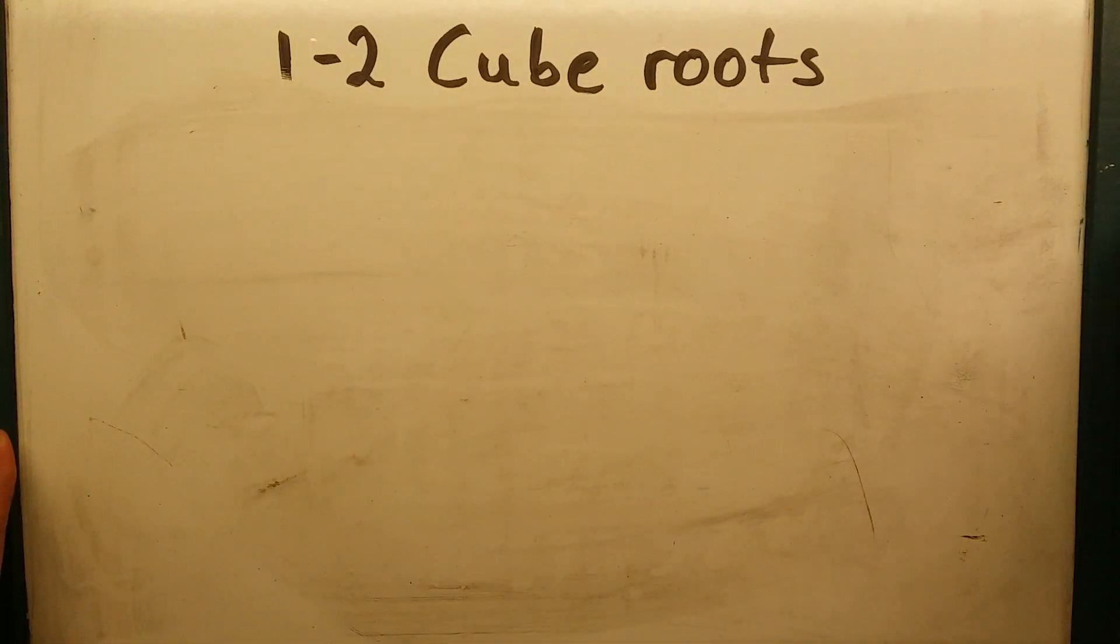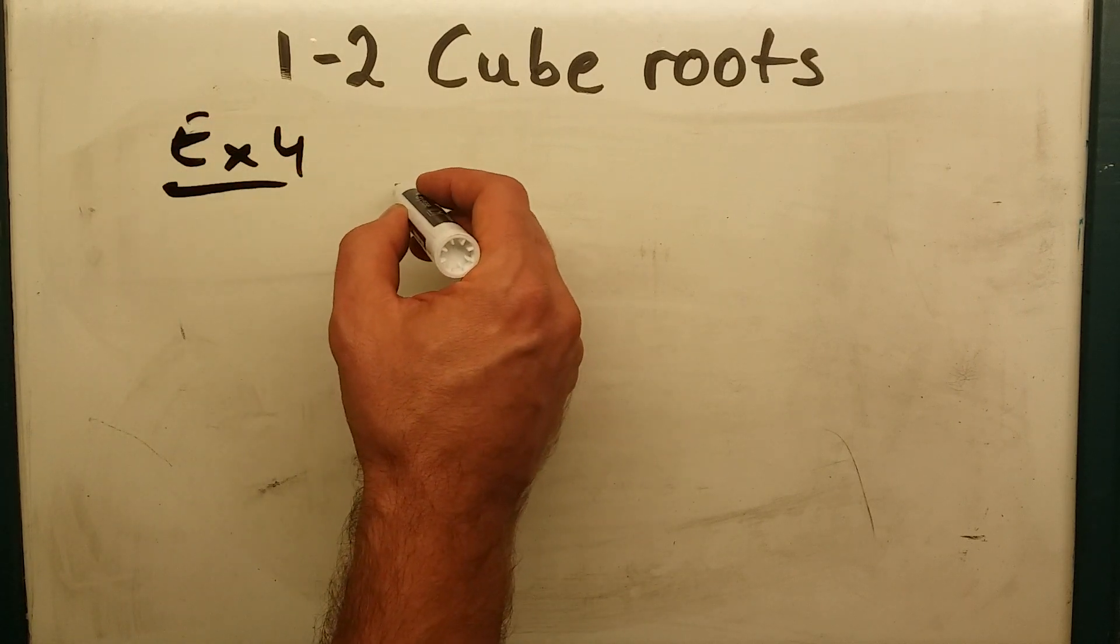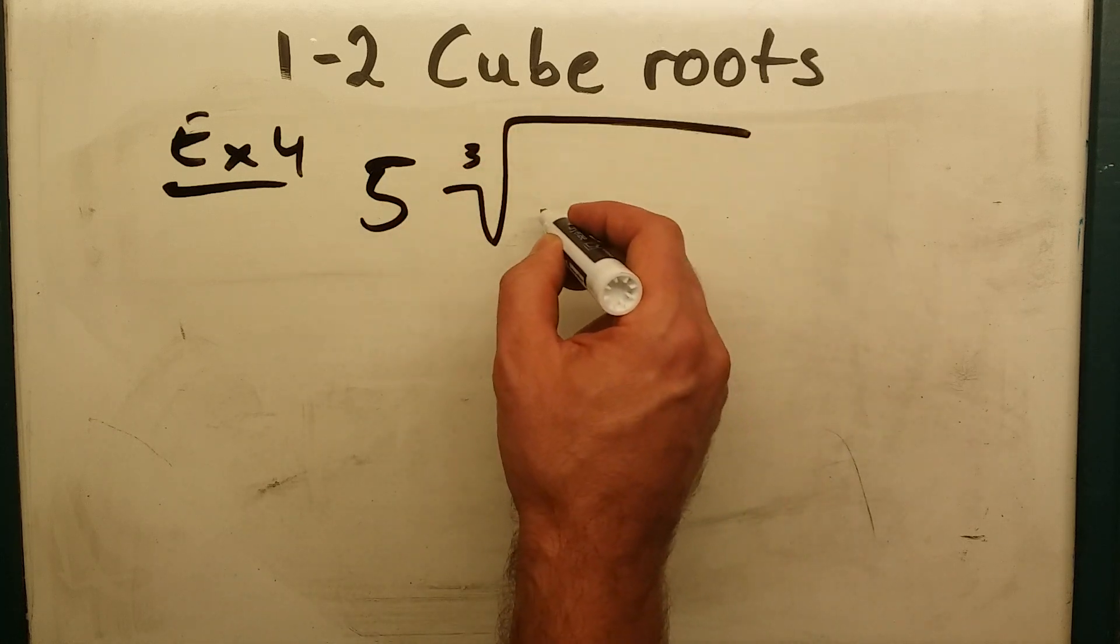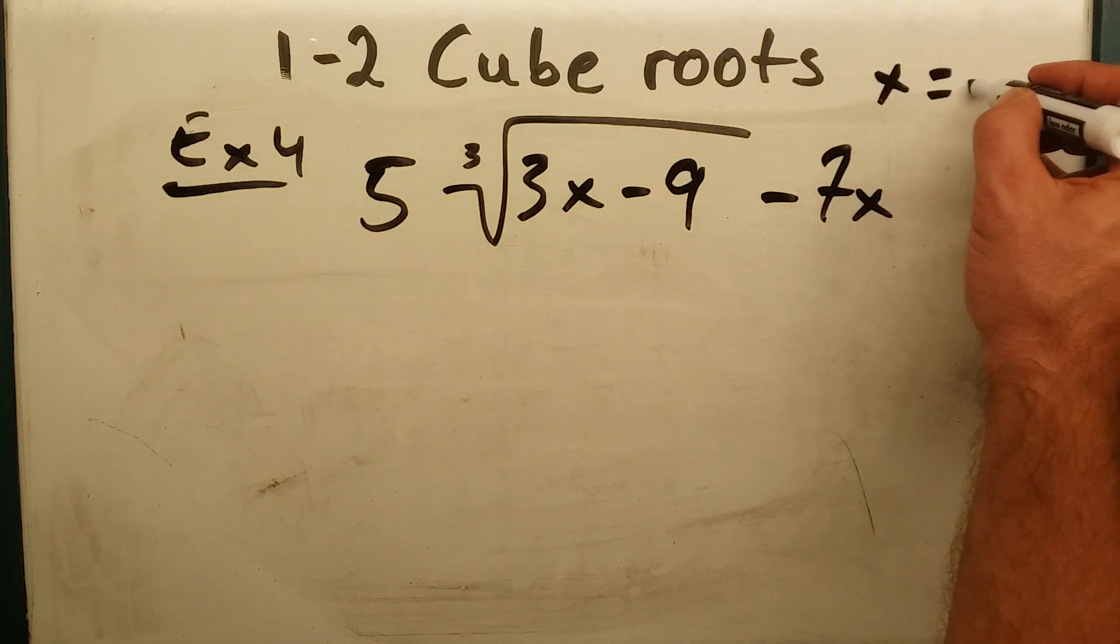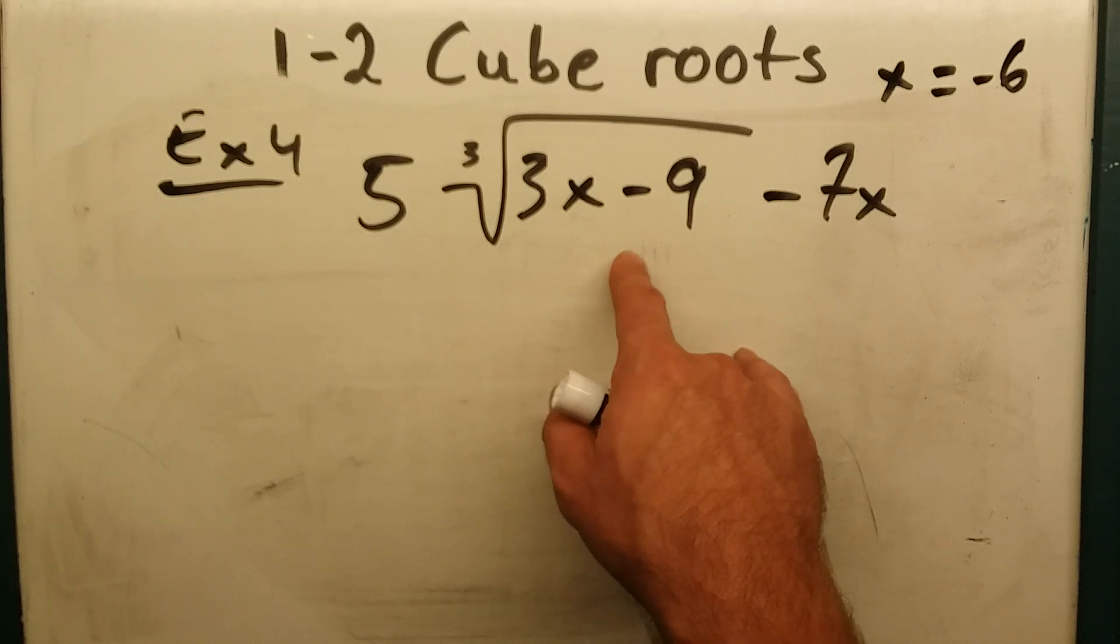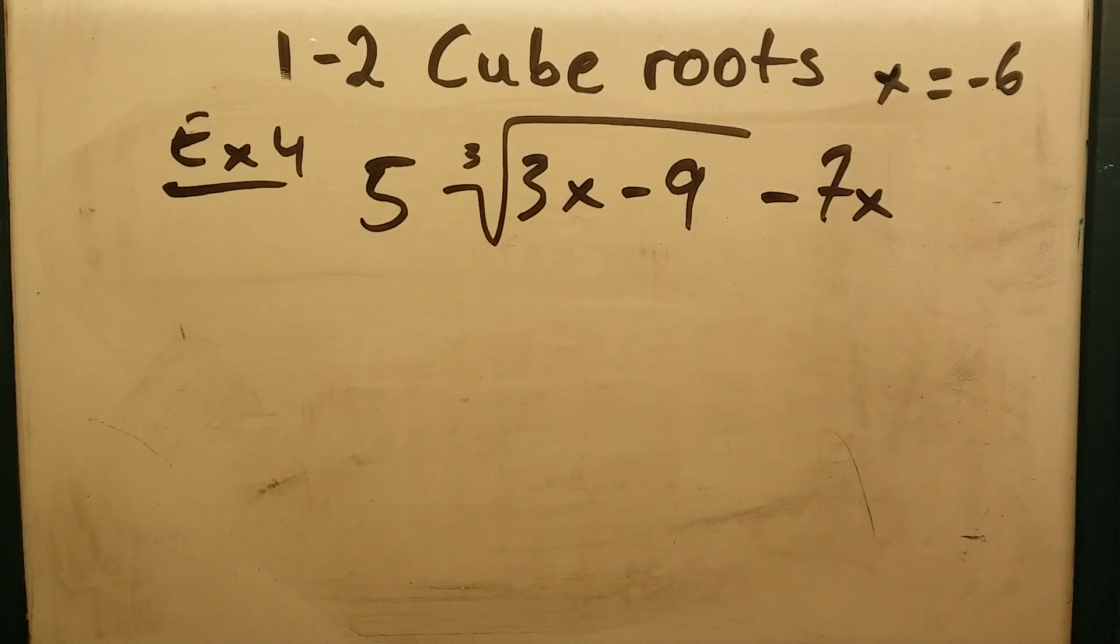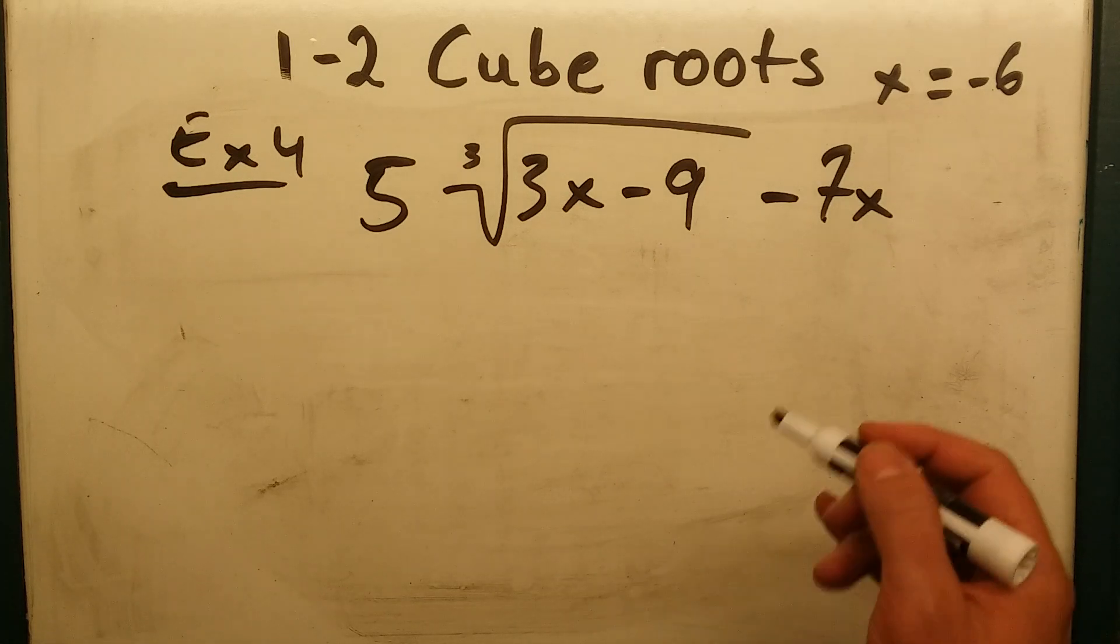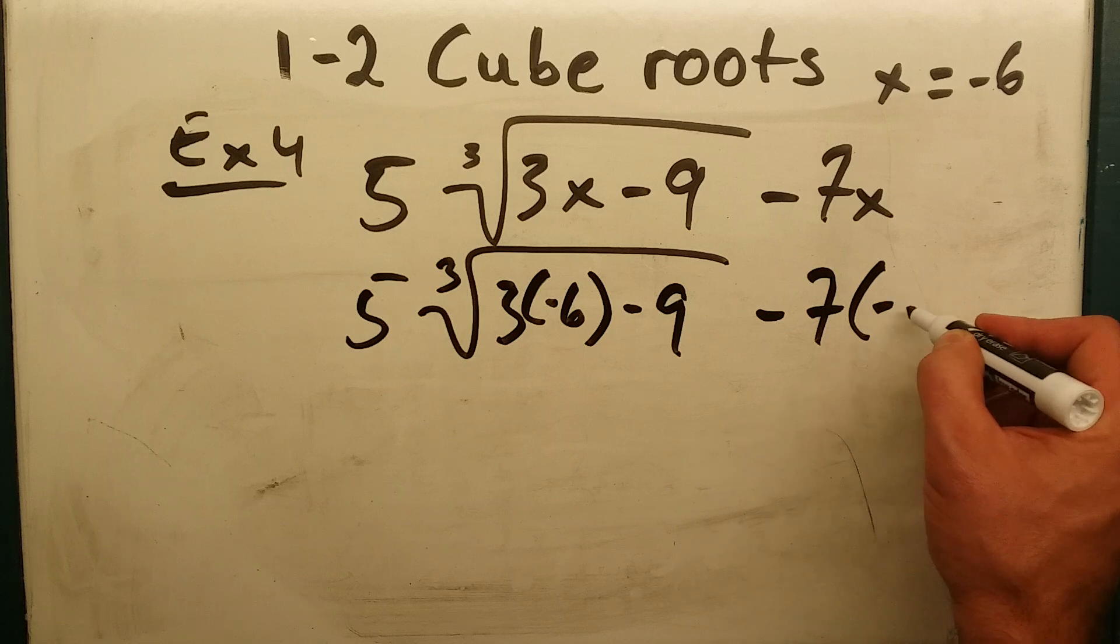Alright. We got one more example for you here. Example 4, 5 times the cube root of 3x minus 9 minus 7x, where x is equal to negative 6. Now, the root, square root, is like a grouping symbol, which means you have, or the cube root, you have to do what's underneath the radical sign first before you evaluate anything else. Alright. Plug this in. We get 5 times the cube root of 3 times negative 6 minus 9 minus 7 times negative 6.